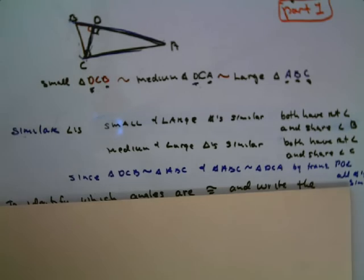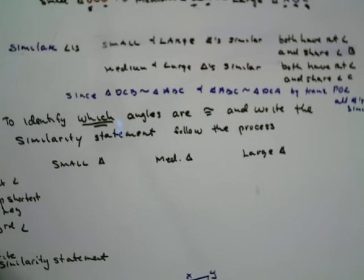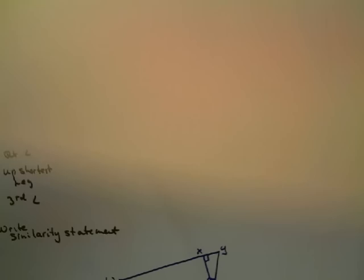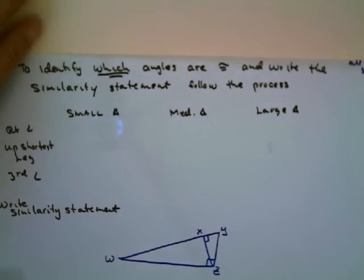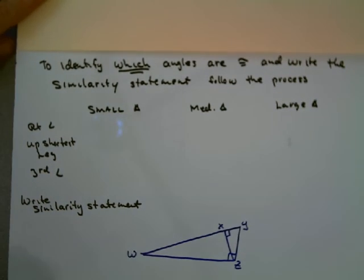Have I got a process for you? To decide which angles are congruent and write the similarity statement, here's the process you're going to follow. So the first thing you'll do is you'll look at your three, and we're going to look at this figure right here now, WXYZ. Notice we have a small triangle, a medium triangle, and our large triangle. And the first thing we're going to do, because you know the congruent angles have to be corresponding.